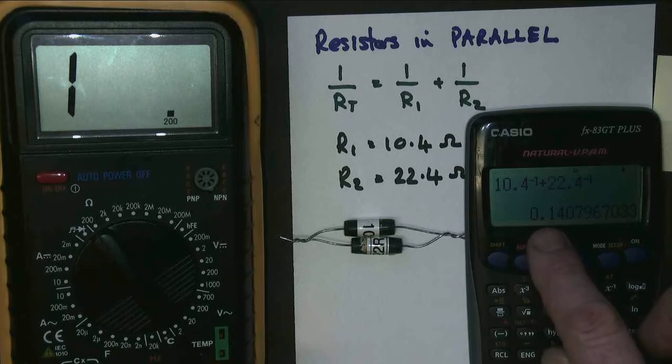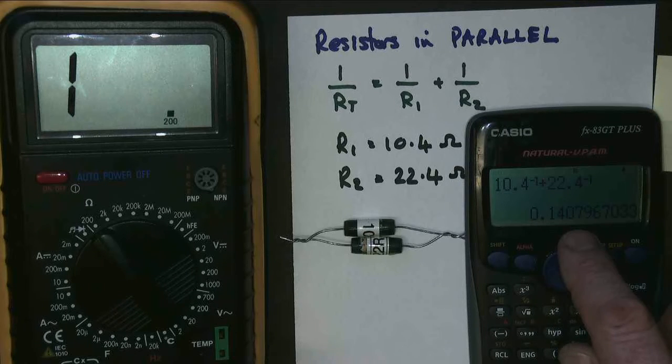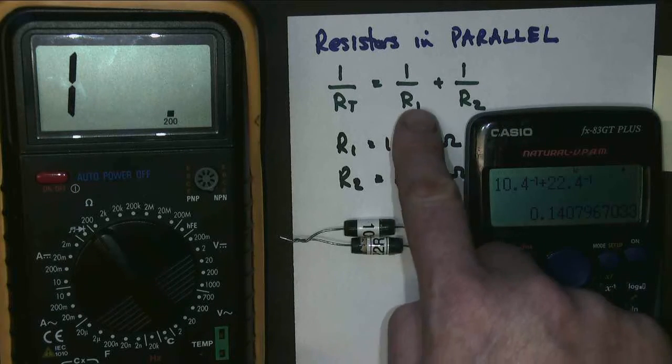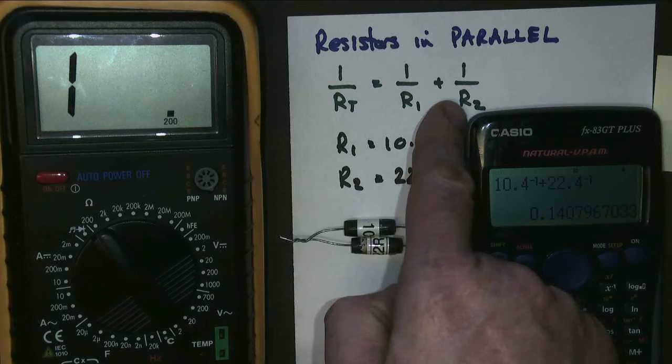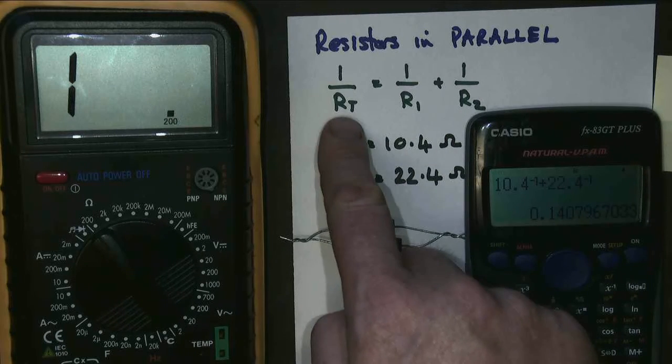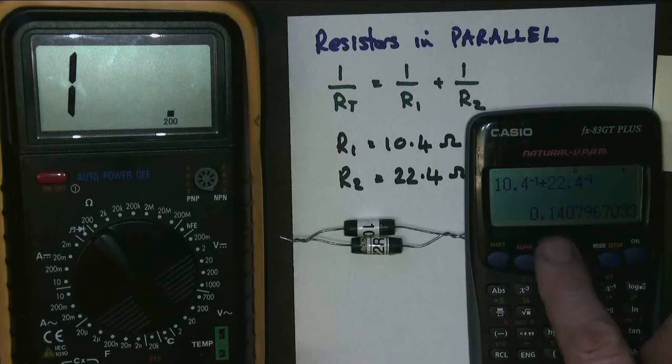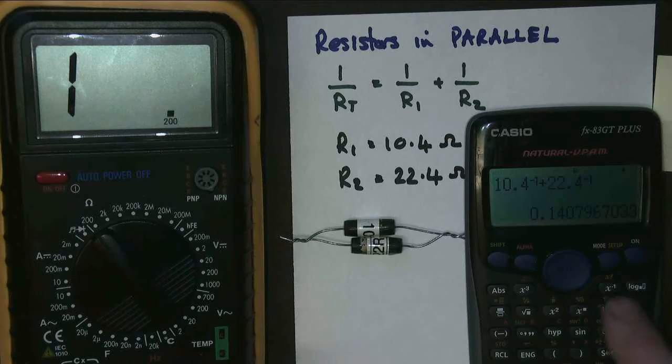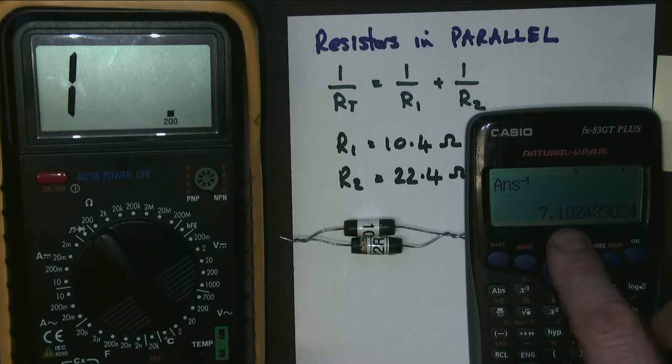And a lot of people make a mistake at that point. They write down that this is the resistance. But it's not. I've done this part of the sum and this part of the sum. So what I've got is 1 divided by the total. So this number here is 1 divided by the total. So to get the total, do 1 over, equals, and we get a value of 7.1.